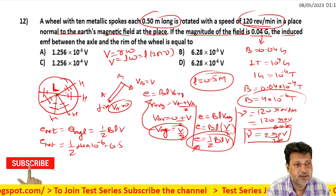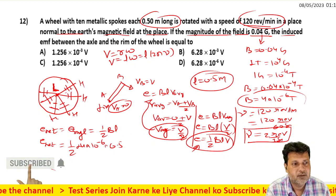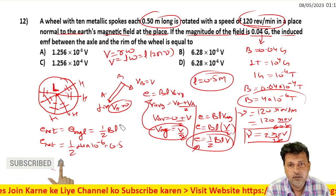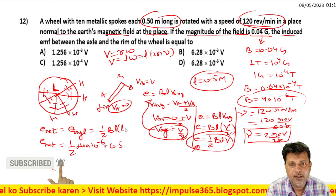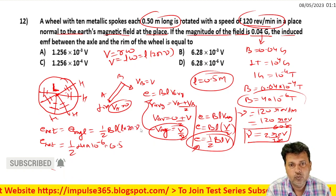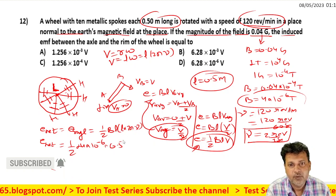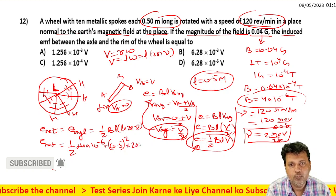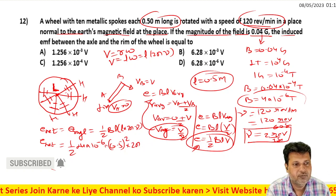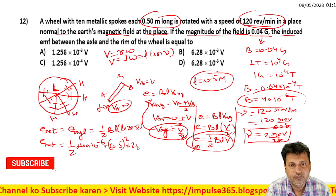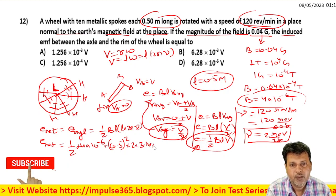The EMF equals one by two B L squared omega. Here, L squared is one by two, and omega equals 2 pi nu. So this becomes pi nu L squared B.